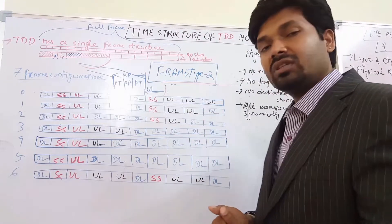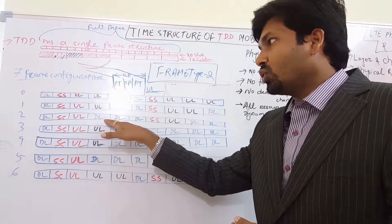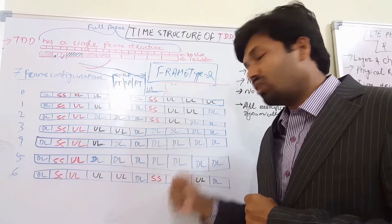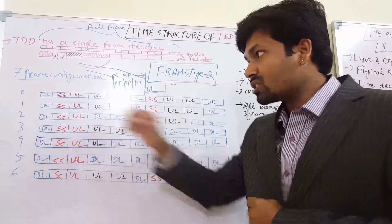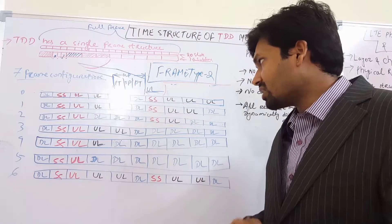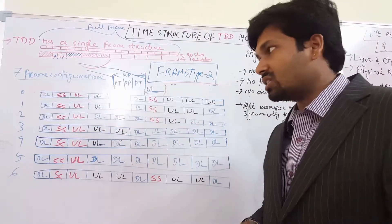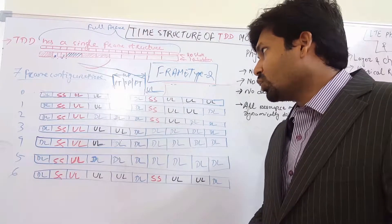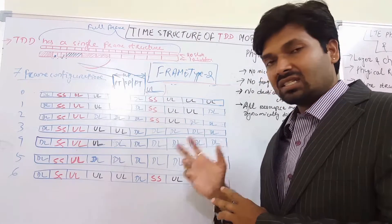Frame configuration type 3 has 3 downlink, 1 uplink, and 1 special subframe per half frame. This gives maximum capacity in the downlink from the available bandwidth in a half frame. In the second half of the frame it is the same: 3 downlink, 1 special, 1 uplink, and 2 downlink. In total we have 6 downlink subframes, 2 uplink subframes, and 2 special subframes — totaling 10 subframes.